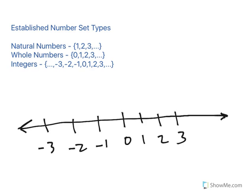Next, we see that there are several different established number set types. Now, we have natural numbers, which are all numbers above zero. So natural numbers would be one, two, three, et cetera.